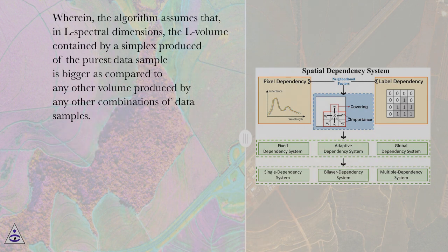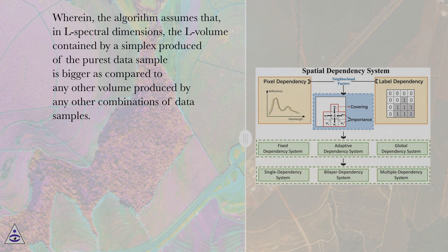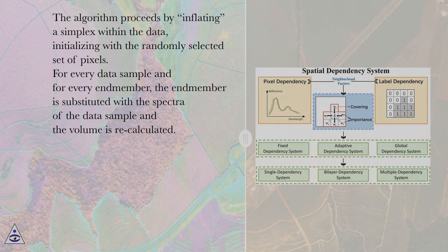The algorithm assumes that in L spectral dimensions, the volume contained by a simplex produced from the purest data samples is bigger compared to any other volume produced by any other combinations of data samples. The algorithm proceeds by inflating a simplex within the data, initializing with a randomly selected set of pixels.